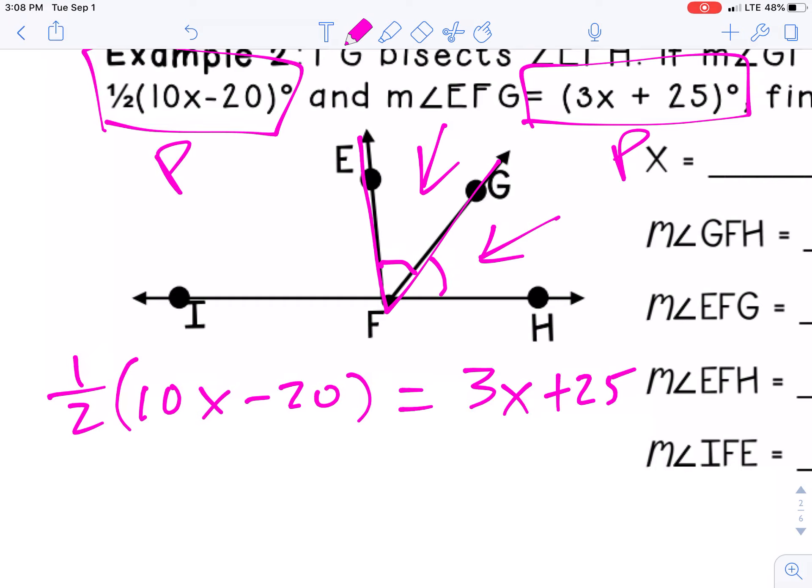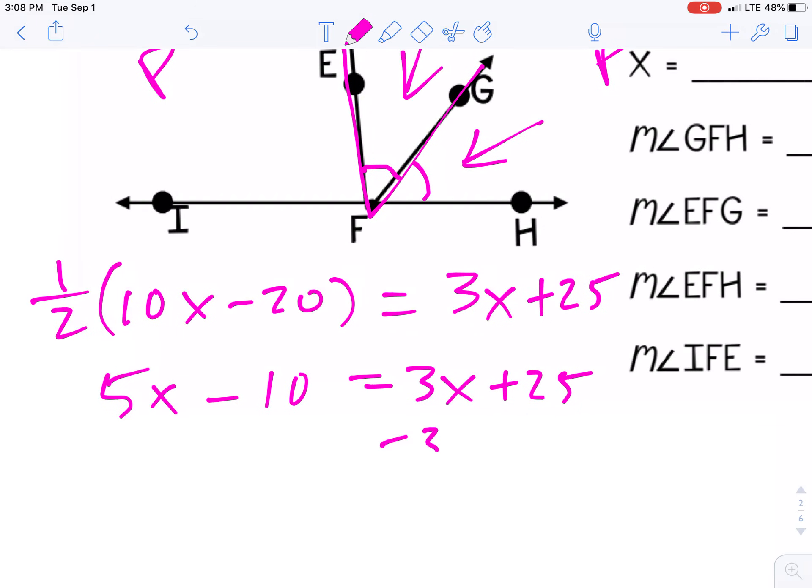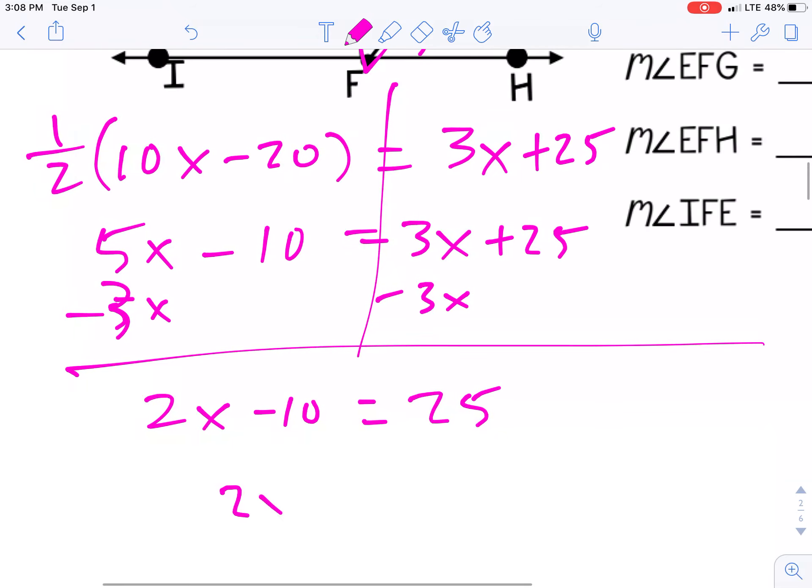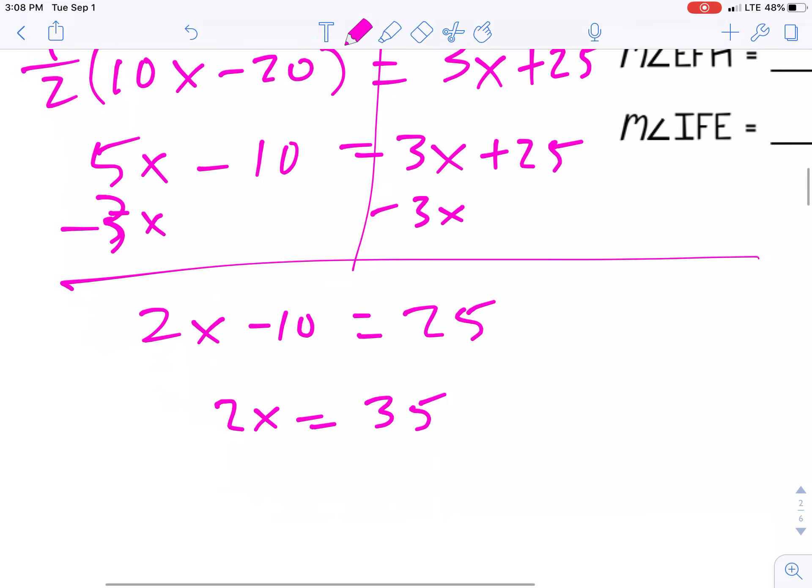All right. Now let's just go through and solve, distribute that half. Or what it's going to do, it's going to take half of those. So 5x-10 is equal to 3x+25. Subtract 3x to both sides because they're on opposite sides of that equal sign. And I get, oh that's an ugly looking, I don't want to confuse that. It's a 3. So 2x-10 equals 25. Add 10, divide by 2, and we get 17.5. That's okay to get decimals.